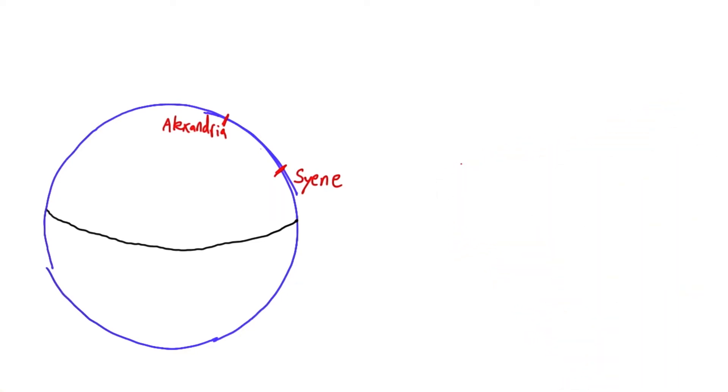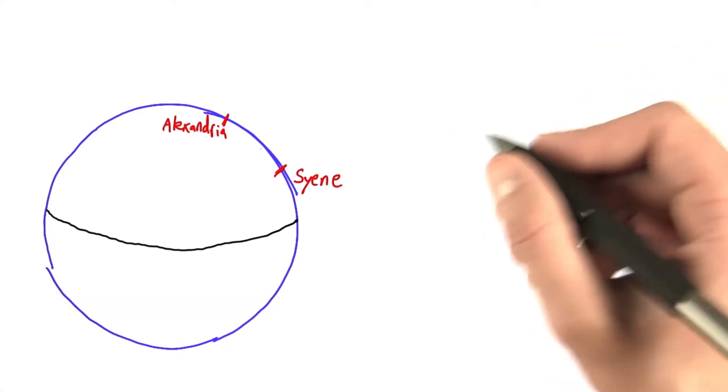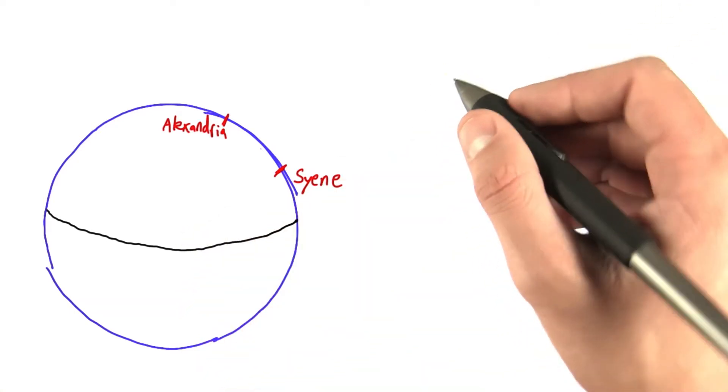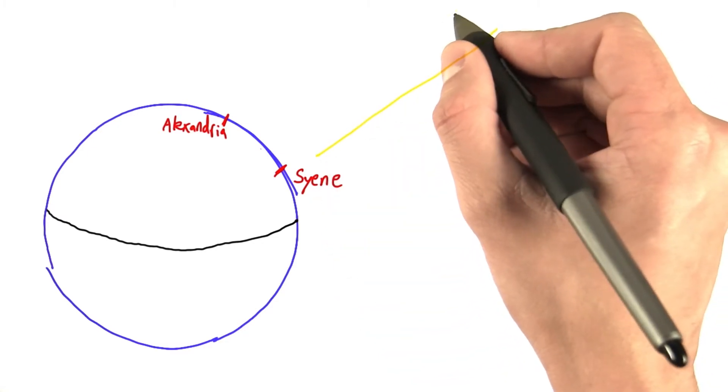And now, the assumption that he made was that the sun was so far away, way, way, way off the screen, that when the sun's rays arrive at the earth, they're coming more or less parallel, no matter where on the earth you are.